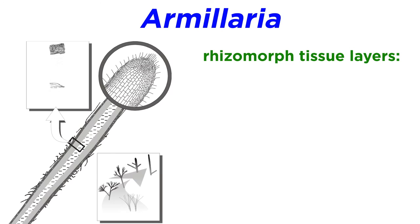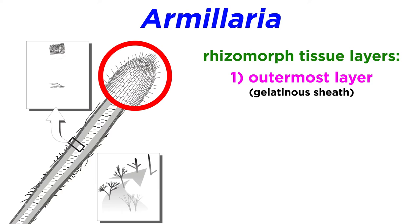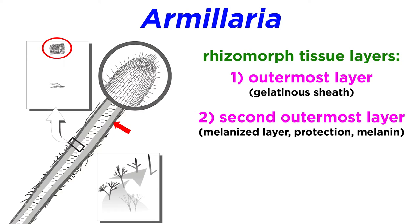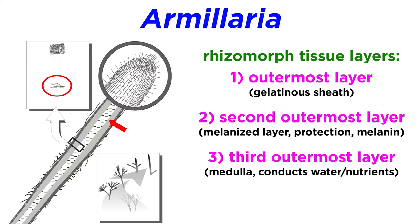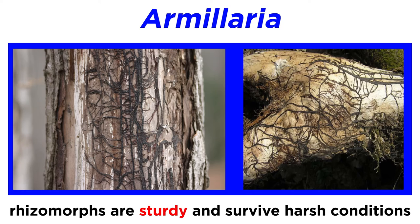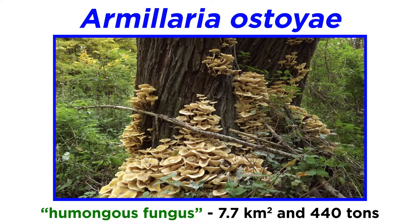The cords have four tissue layers. The outermost layer at growing points consists of a gelatinous sheath. Inner to the gelatinous layer is a melanized layer, which protects the cord from bacteria and other fungi, and possesses the molecule melanin, which protects tissue from ultraviolet radiation damage. Inner to the melanized layer is the medulla, which conducts water and dissolved nutrients. The innermost layer is the central line that transports air. Rhizomorphs are sturdy structures and can survive harsh weather conditions, allowing long-term spread of an individual honey mushroom.